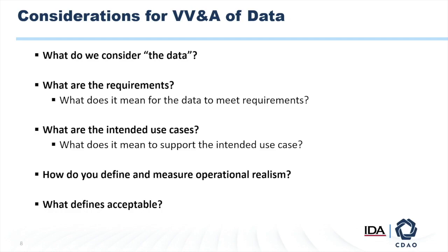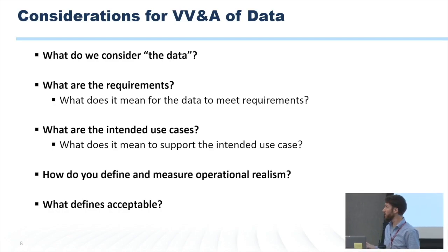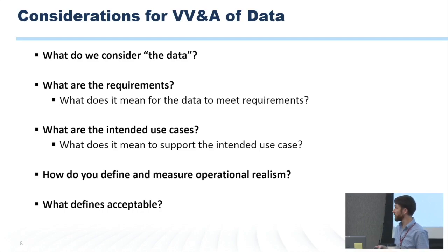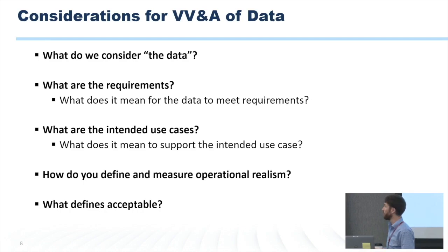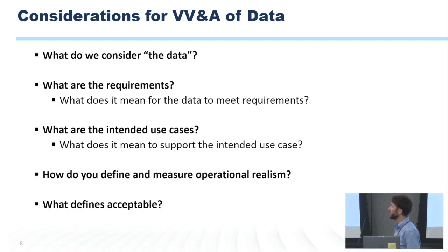In the course of developing and testing your model, you may need to change some things about the design. What does that mean about the requirements? Maybe you get to your user base and determine that it doesn't actually meet what they need, and you need to go back and revise some things. Maybe you want to change the model architecture — there's another model architecture that's better for the use case. So how does that affect requirements for your data? It may cause some requirements to change. Intended use cases: what does it mean for the data to support the intended use case? Remember, the foundation of the AI model is the data itself.